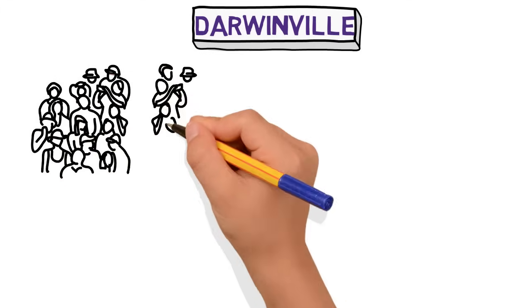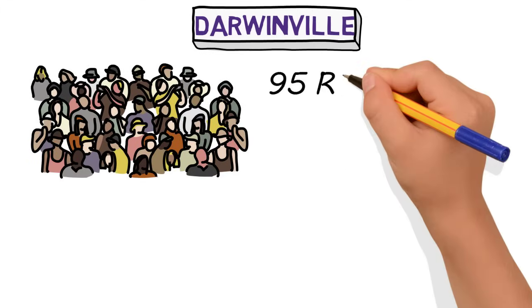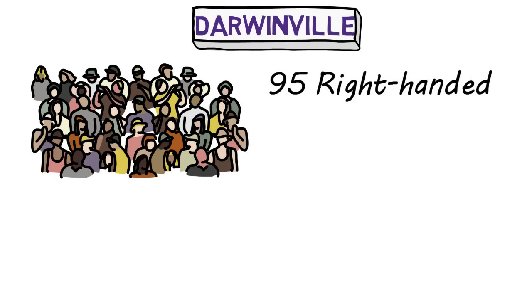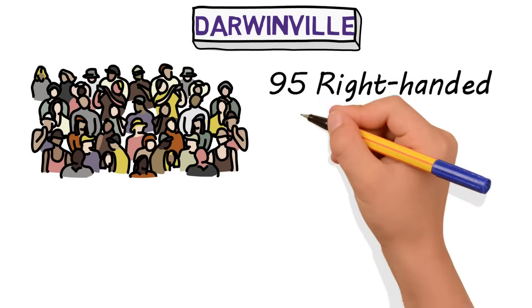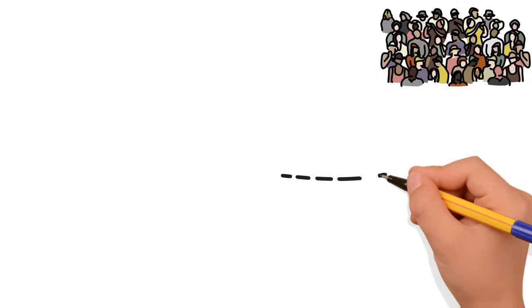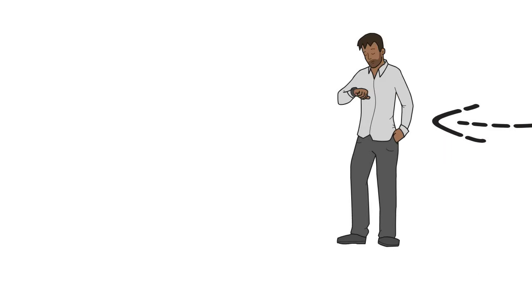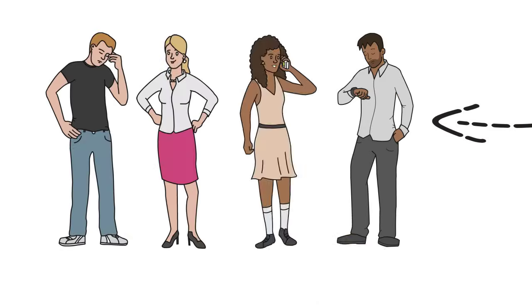Let's say that you have a town called Darwinville, and you have 100 people that live in this town. Of those 100 people, 95 of them are right-handed and the other five are left-handed. A small group of about four people from Darwinville decide to move away and settle some new uninhabited land, and these four individuals happen to all be left-handed.